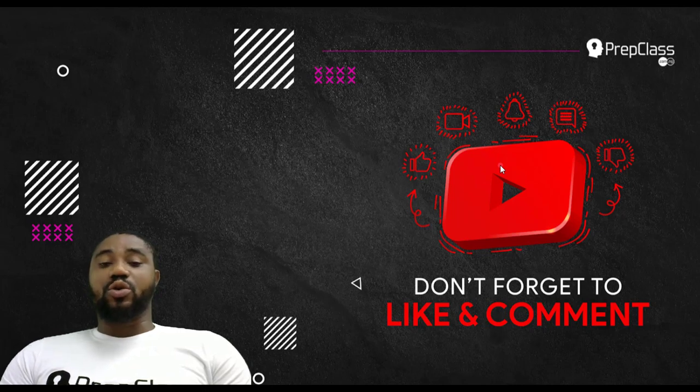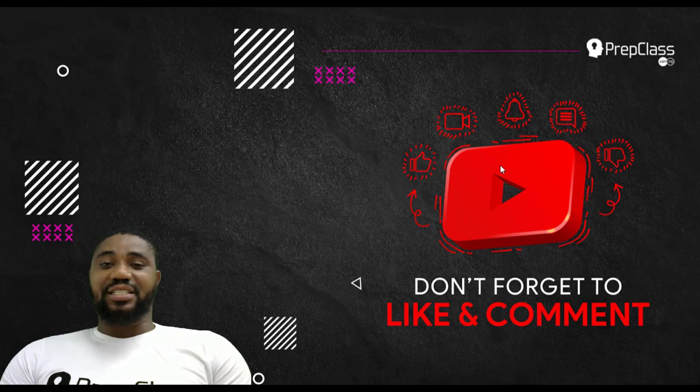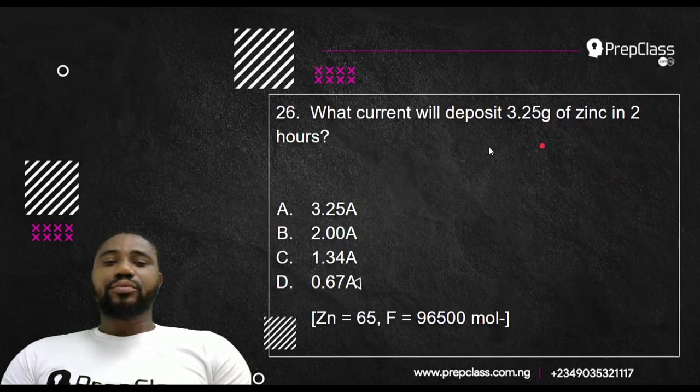Having said that, we are going to be solving JAMB past questions on chemistry for the year 2019. We're looking at questions 26 to 30. So now let's start.